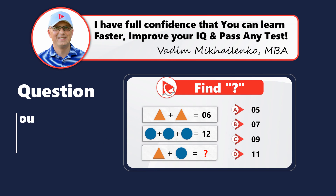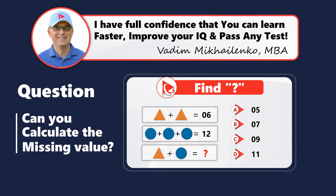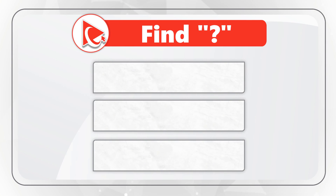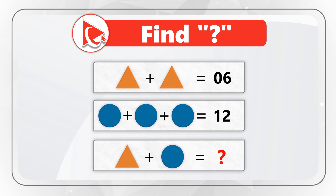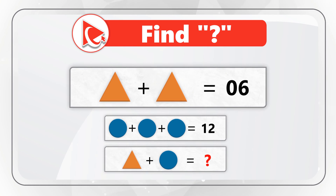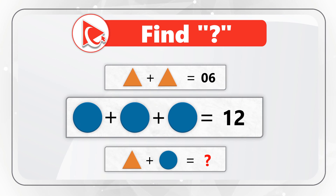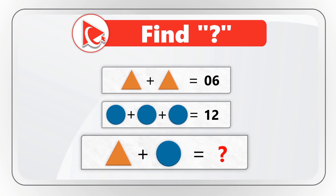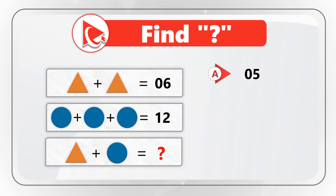Here's an interesting cognitive abilities test question to see how well you can deal with abstract concepts. You're presented with three expressions with shapes and numbers. The first expression is triangle plus triangle equals six. The second is circle plus circle plus circle equals 12. The third expression is triangle plus circle, and you need to calculate the end result. Select the answer out of four possible choices.